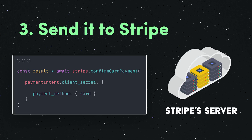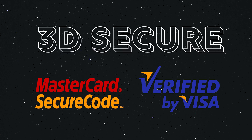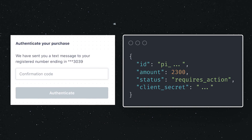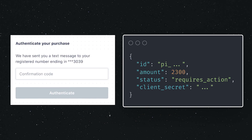It will attempt to finalize the payment, but many parts of the world now have regulations in place that require additional authorization for the payment. The payment intent now has a status of requires action. Stripe will handle this process for you entirely in the front end, and once complete, your payment intent will move to a status of succeeded.